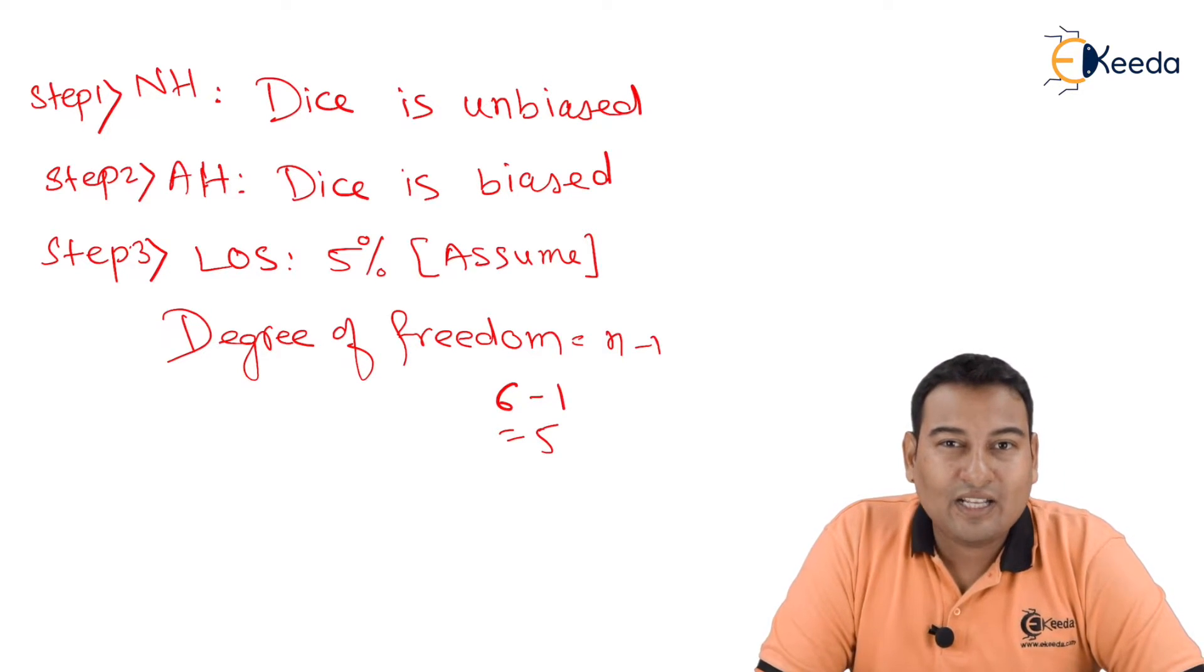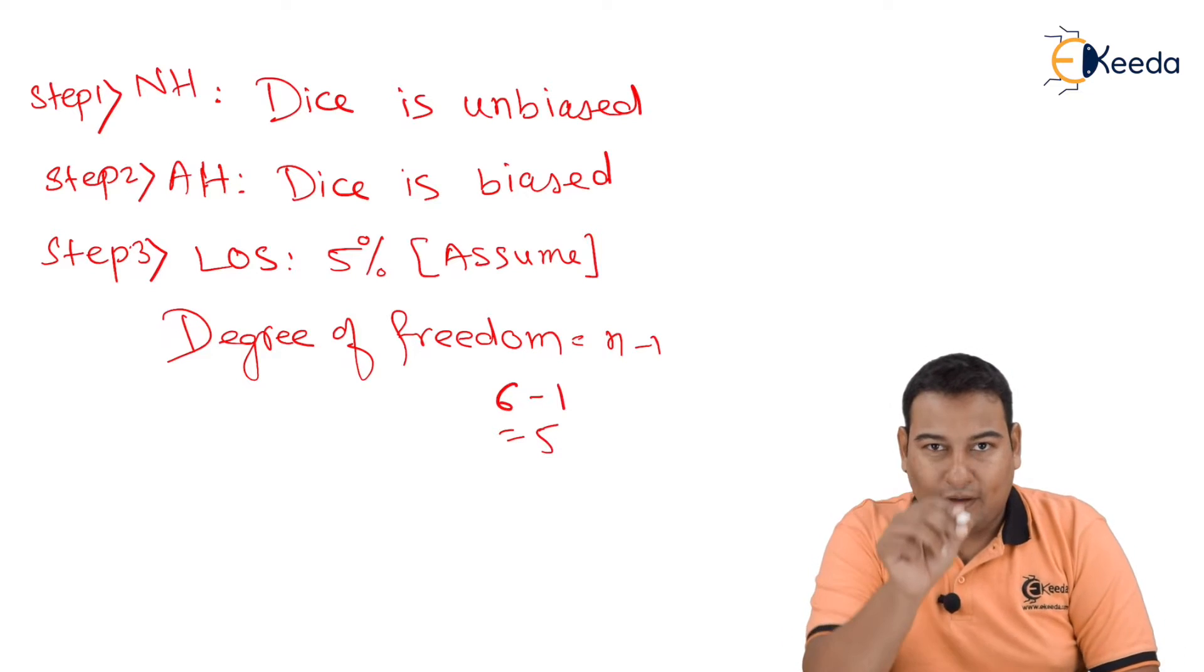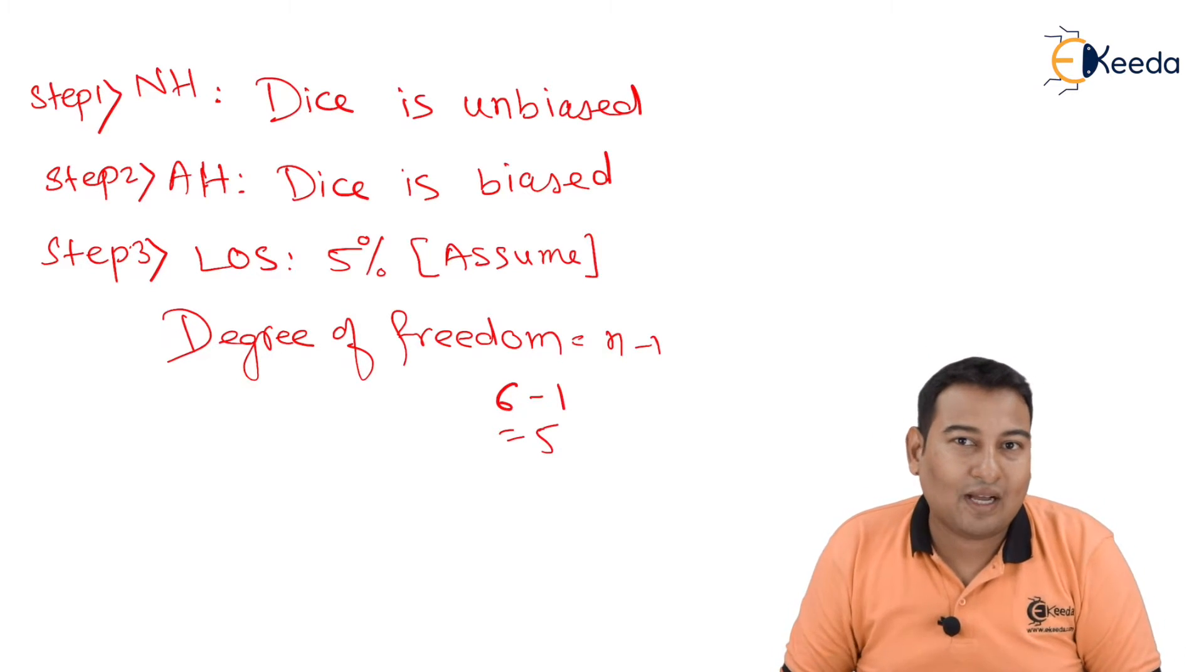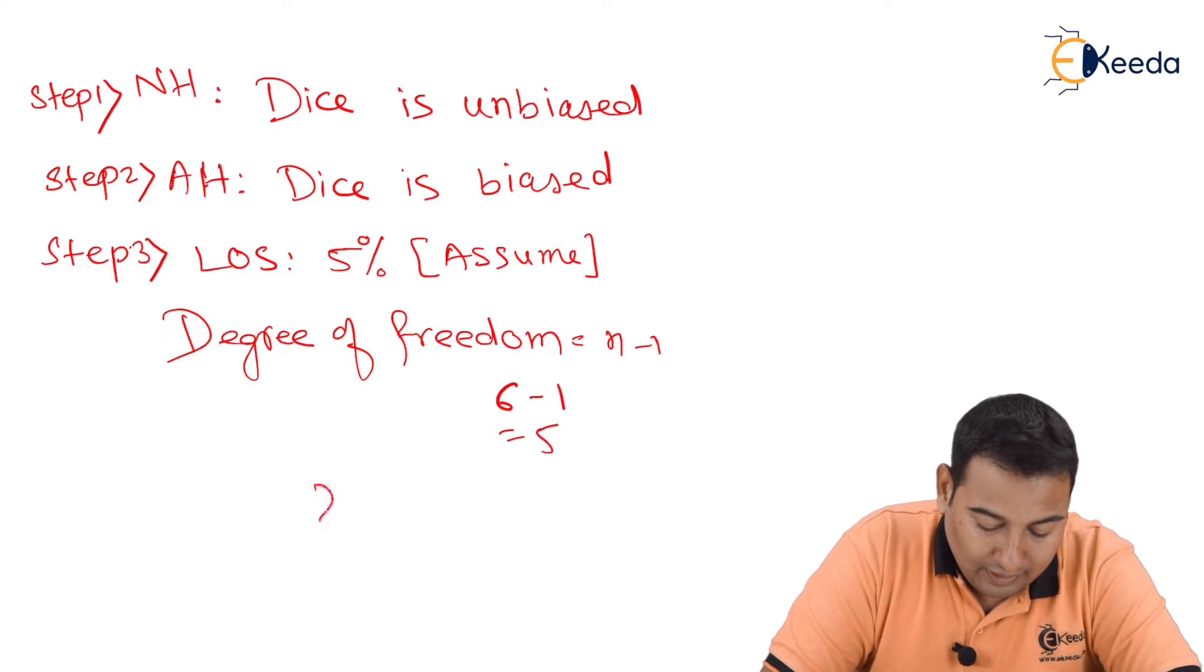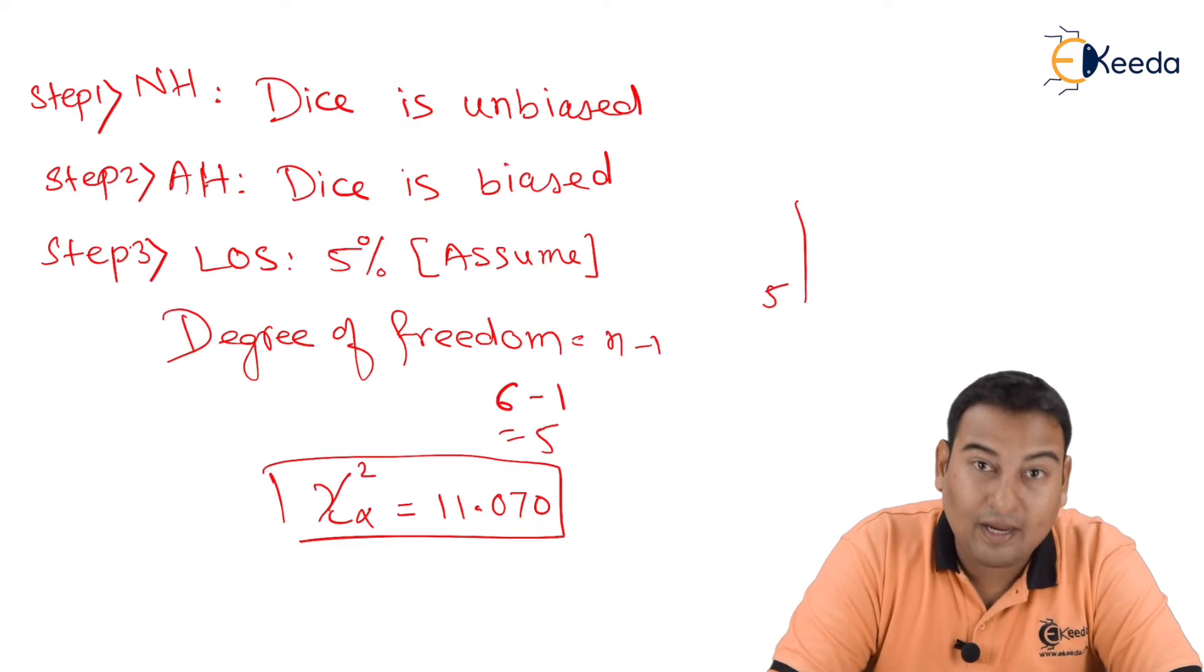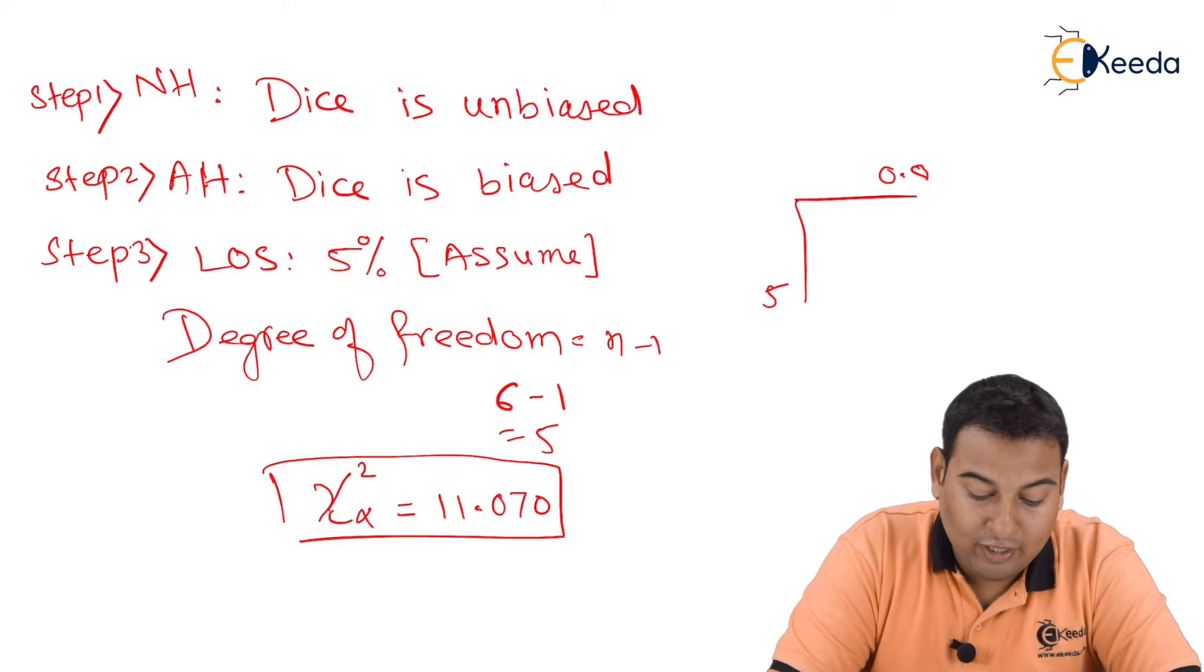I am going to go to chi-square table and check for this 0.05. This is the value of chi-square that I'm going to get. After checking, looking at the table, I am getting the value of chi-square alpha is 11.070. Check 0.05 on top and this is the required value.